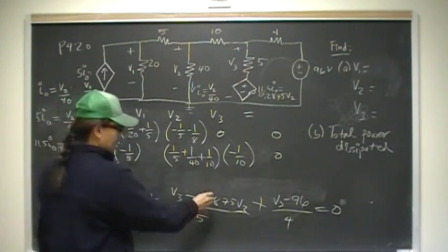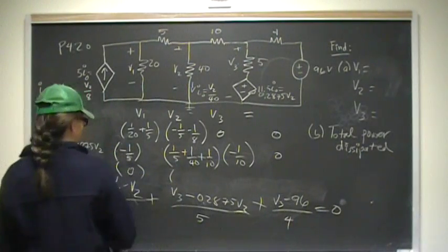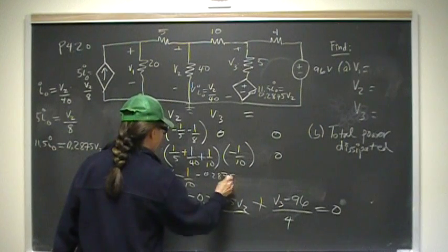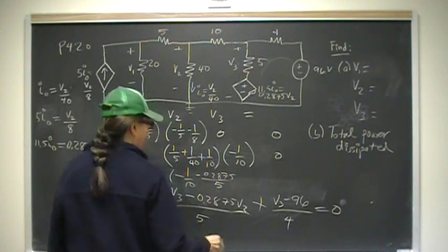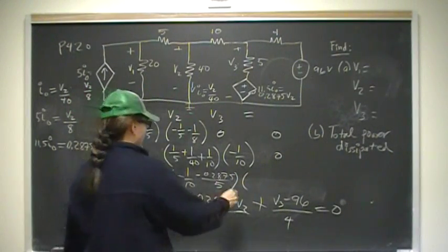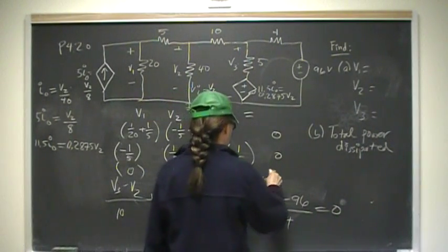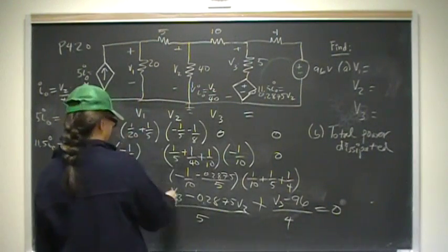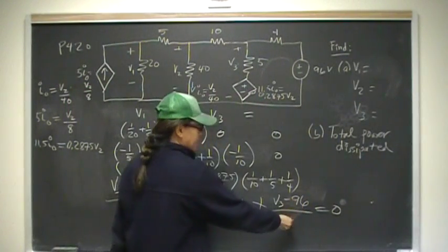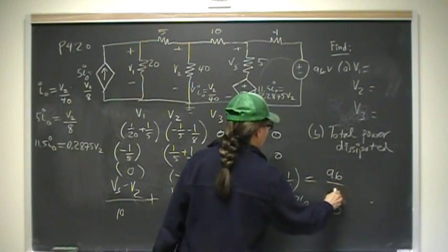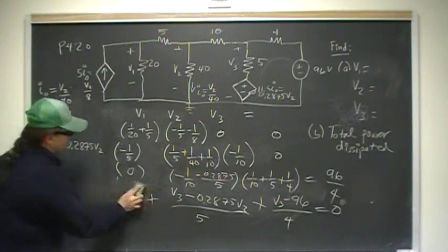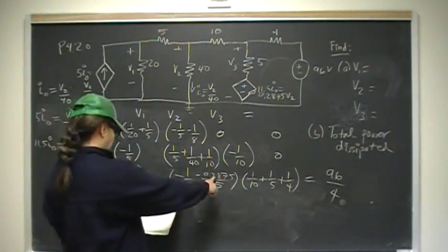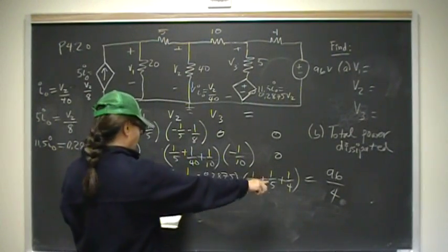Putting that into the matrix: for V1 I have 0; for V2 I have negative 1 over 10 minus 0.2875 over 5; for V3 I have 1 over 10 plus 1 fifth plus 1 fourth; and constants: 96 over 4 on the right-hand side. So that completes the 3×3 matrix. Let me verify: 0, negative 1/10, negative 0.2875 over 5, 1/10 plus 1/5 plus 1/4, equals 96/4.